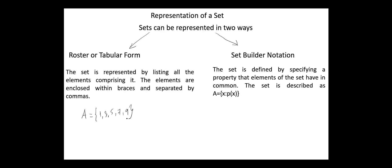In the set builder notation, the set is defined by specifying a property that elements of the set have in common. For example, the same set of odd integers less than 10 can be written as follows: A = {x | x < 10 and x ≥ 1, and x mod 2 ≠ 0}.